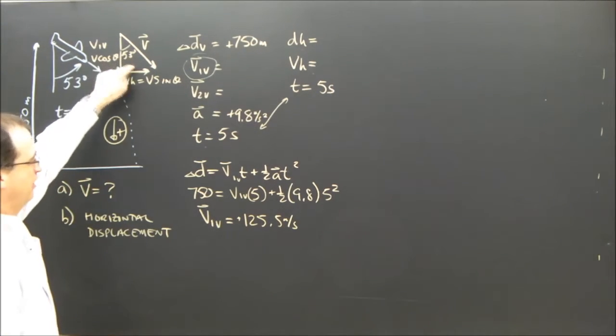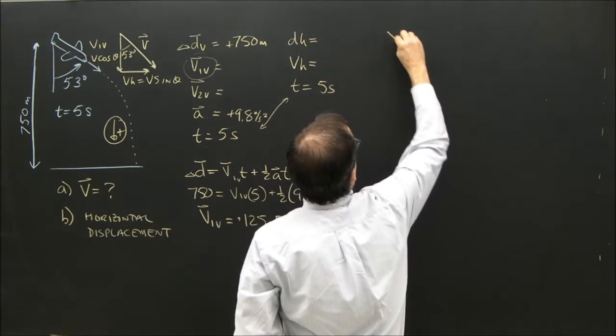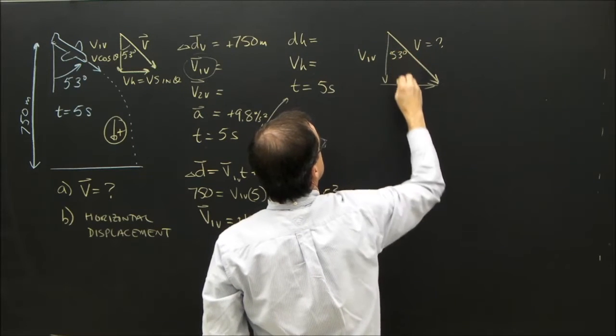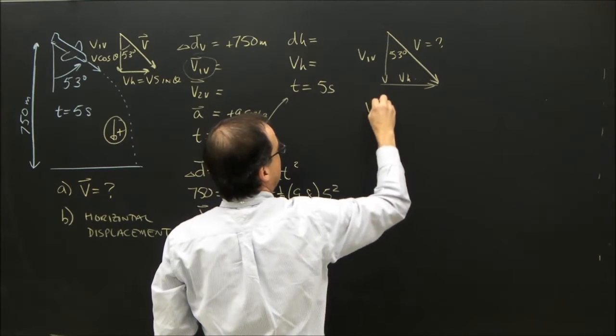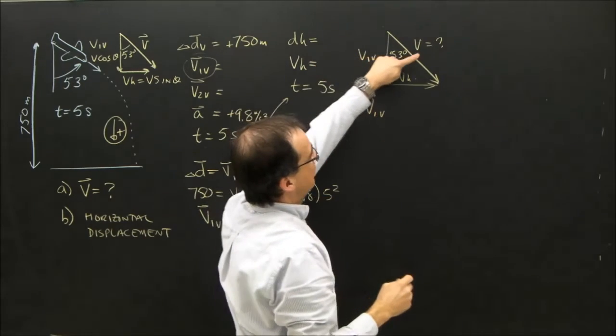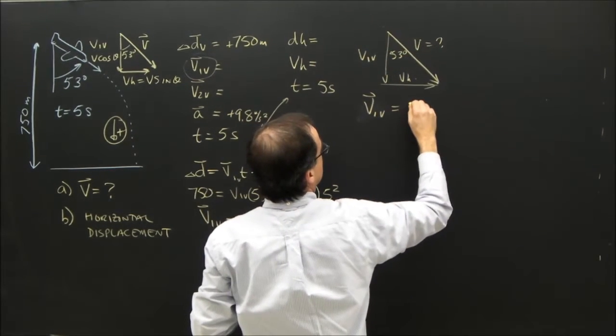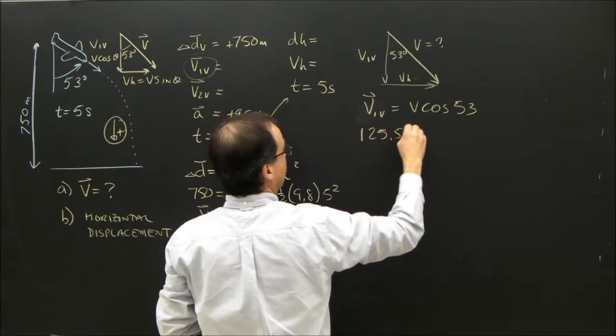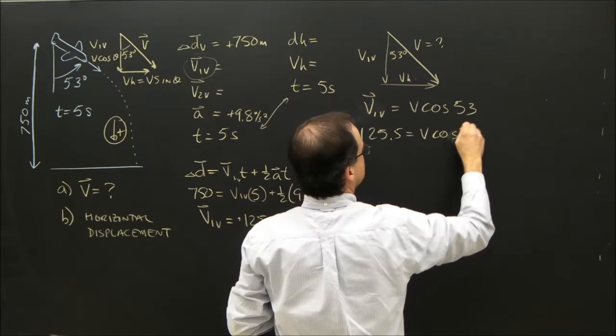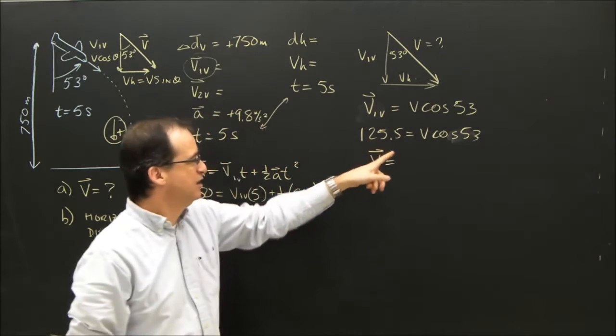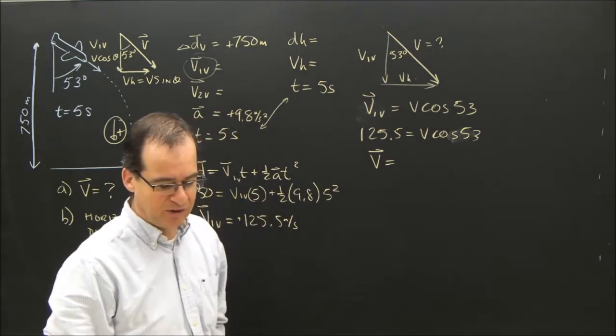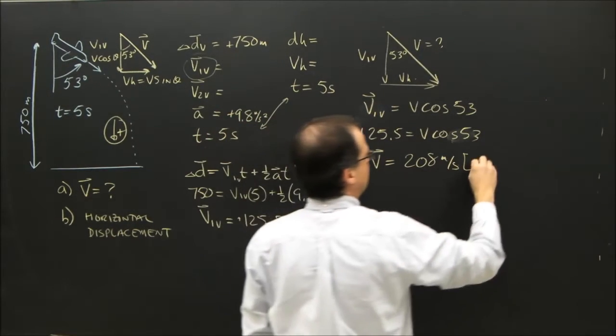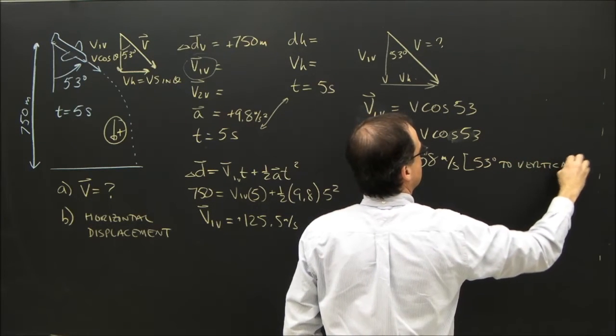Alright, so now I'm going to look at this triangle and use this to find the velocity. Let's draw a little bit better triangle. This is the velocity I'm looking for. This is V1 vertical, this is 53 degrees, and this is V horizontal. Now, V1 vertical, if I knew the velocity, it's V cosine 53. So I know V1 vertical. 125.5 equals V cosine 53. So the initial velocity is 125.5 divided by cosine of 53, and it works out to 208. So the velocity is 208 meters per second, 53 degrees to the vertical.